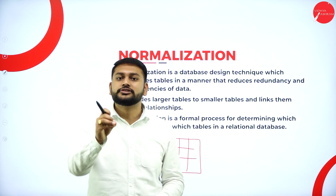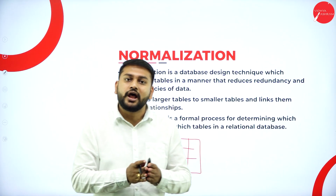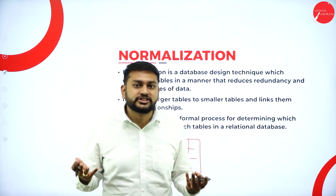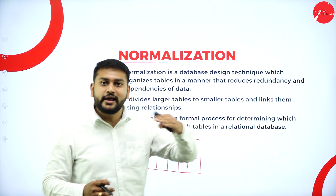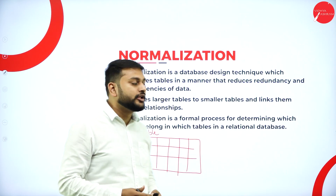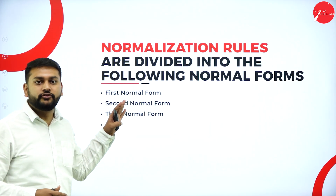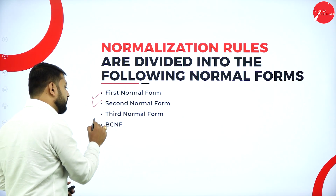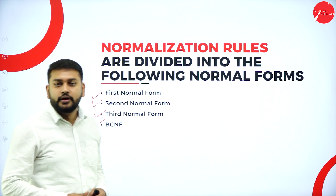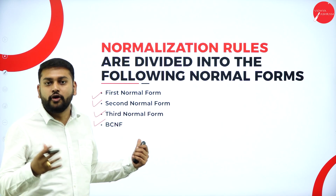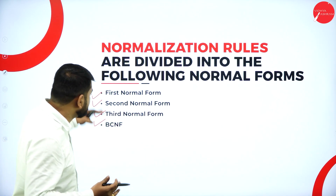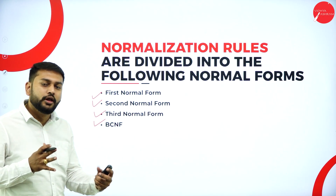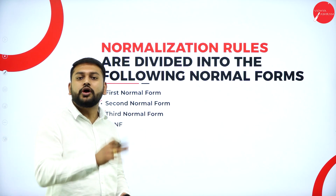If you use the concept called normalization, you can avoid all the different types of anomalies and also redundancy of data. How do I achieve that? I have a step-by-step explanation. The different types of normalizations in your syllabus are: first normal form, second normal form, third normal form, and BCNF. What exactly are these normal forms all about? What is first normal form? Which state of the table do you call first normal form?